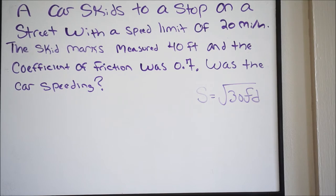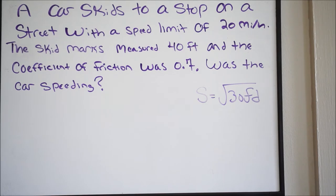It says a car skids to a stop on a street with a speed limit of 20 miles per hour. The skid marks measured were 40 feet and the coefficient of friction was 0.7. Was the car speeding?